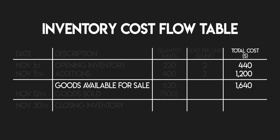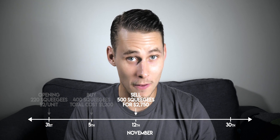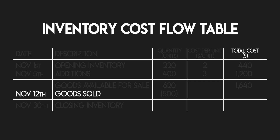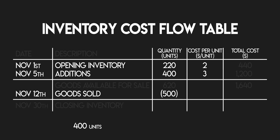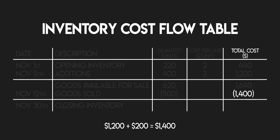When using LIFO or FIFO you can ignore the cost per unit of your goods available for sale, goods sold, and closing inventory. Now let's calculate your total cost of goods sold. You sold 500 units — remember, LIFO means last in first out. The last SQUIDGEES you bought were your additions of 400 units at $3 per unit. But you still need to sell another 100 units to reach 500, and those come from your opening inventory at $2 per unit. So: 400 units × $3 = $1,200, and 100 units × $2 = $200. $1,200 plus $200 is $1,400 — your total cost of goods sold.